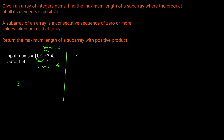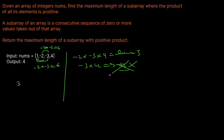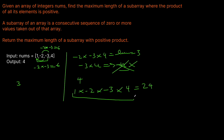Then we get to the four. We could have minus two times minus three times four, which is length three. We could have minus three times four, but that's negative twelve, which is not positive. We could go just four, but that's length one which isn't better than the three we found. Or we could go one times minus two times minus three times four, which is going to be 24. That's length four and it has a positive product, so that's where we get the four from.